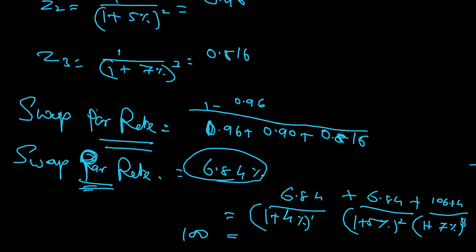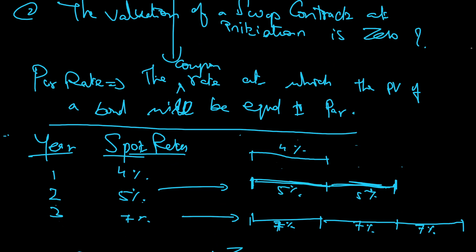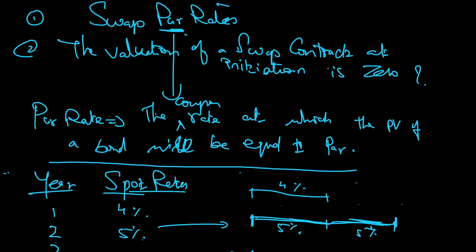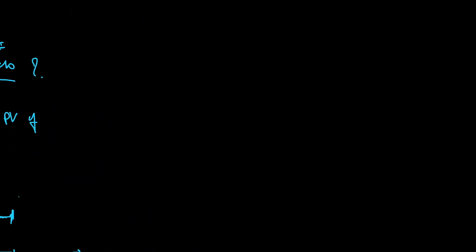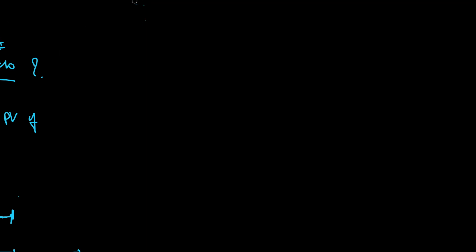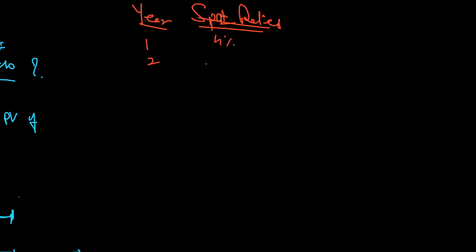Now, moving ahead — why do I say the valuation of a swap contract at initiation is zero? Let me prove this. Let me write the spot rates again using another color. Year one spot rate is four percent, year two spot rate is five percent, and year three spot rate is seven percent.